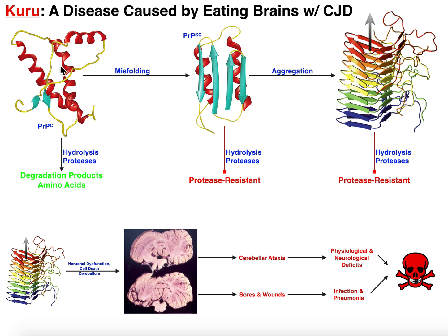Additionally, stomach acid will be able to denature this protein, so you would easily be able to degrade it. However, this protein can misfold into the PrPSC form — the infectious form of the prion. Notice that it actually has more beta strands than alpha helices. That's one defining characteristic of these misfolded proteins that then begin aggregating.